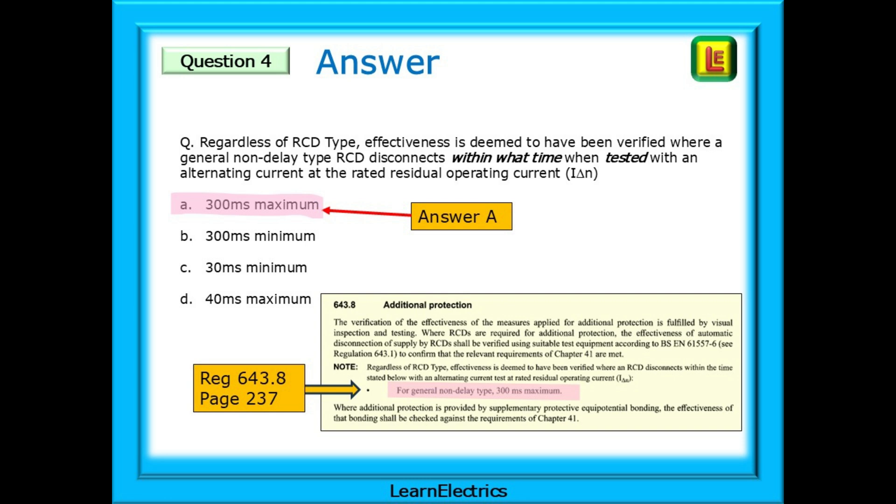The clue is the word tested, that should take you to part 6 of the book, Testing. After that, finding 643.8 is easy. This is the only RCD tripping test that we are required to do now, regardless of type AC, type A, type B, or type F. No need for 5 times test if you don't need to do it. Many, though, still do.